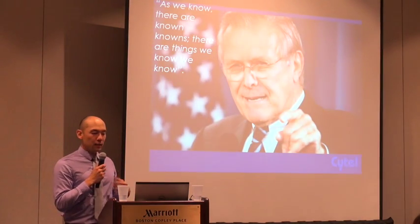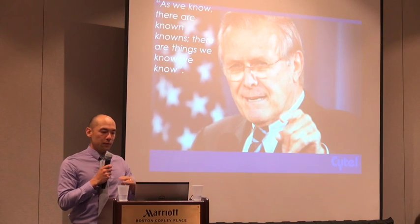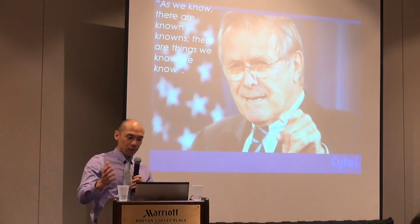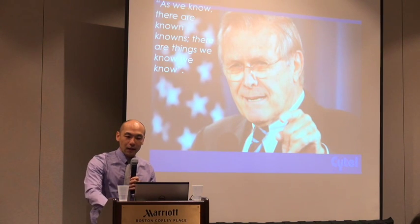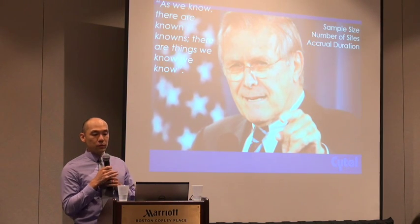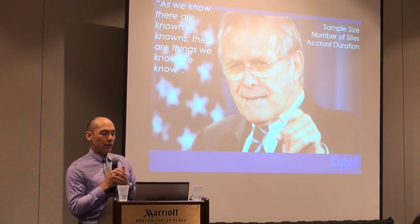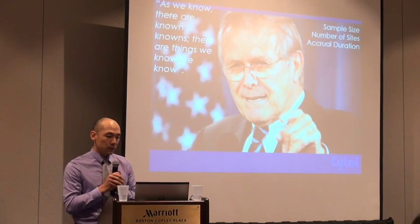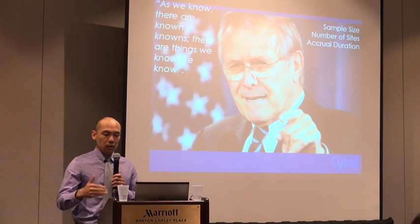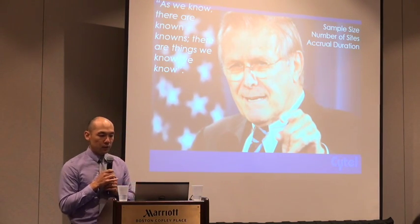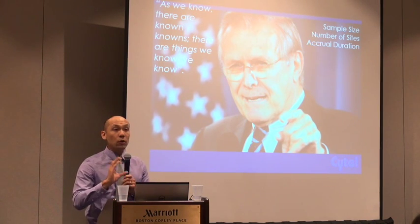So how do we go about building these simulation models? There are a few different types of inputs. First, there are known knowns — things we know we know. In this context, these are things like sample size: the number of patients we want to target, the number of sites and countries we want to target, and perhaps a particular recruitment duration. These are fixed constants in our model.